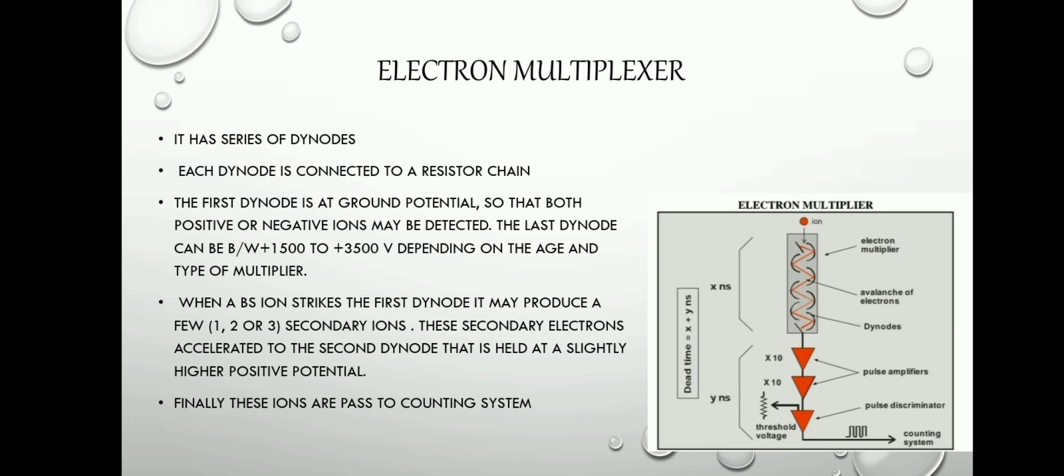When an ion strikes the first dynode, it may produce a few secondary electrons. These secondary electrons are accelerated to the second dynode that is held at a slightly higher positive potential. Finally, these ions are passed to a counting system.